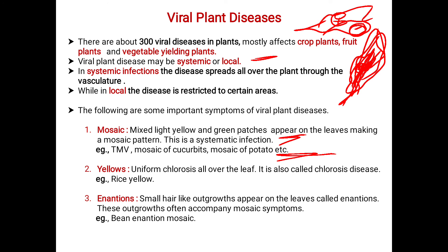Next comes yellowing, also called chlorosis disease. Here, uniform chlorosis occurs all over the leaf. The chlorophyll pigment gets reduced and the green plant turns yellow. An example is rice yellow, where chlorosis takes place.